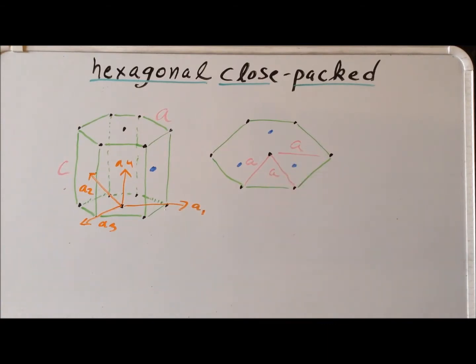If we're looking down on the HCP (0001) plane, this particular projection is also helpful in demonstrating the packing scheme of HCP. The atoms that are represented in black, we think of as the capital A layer.